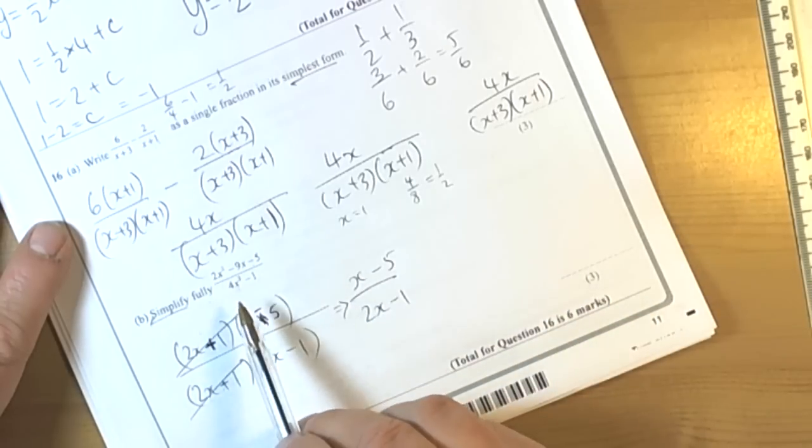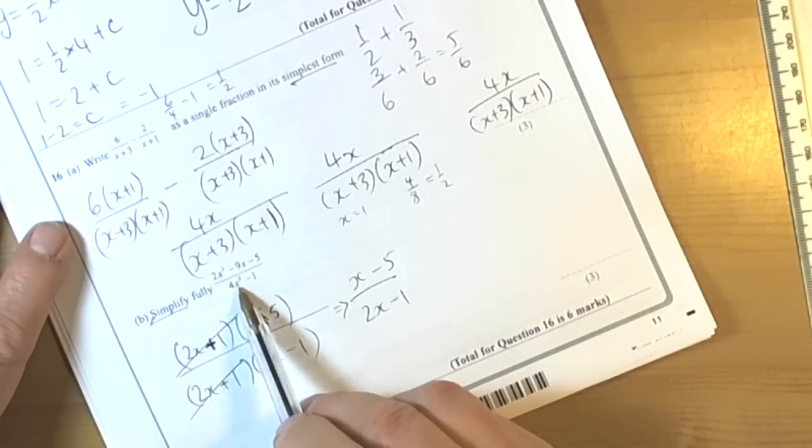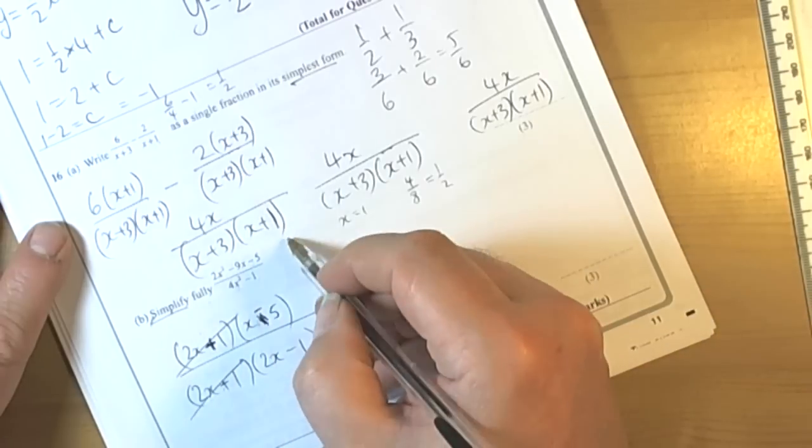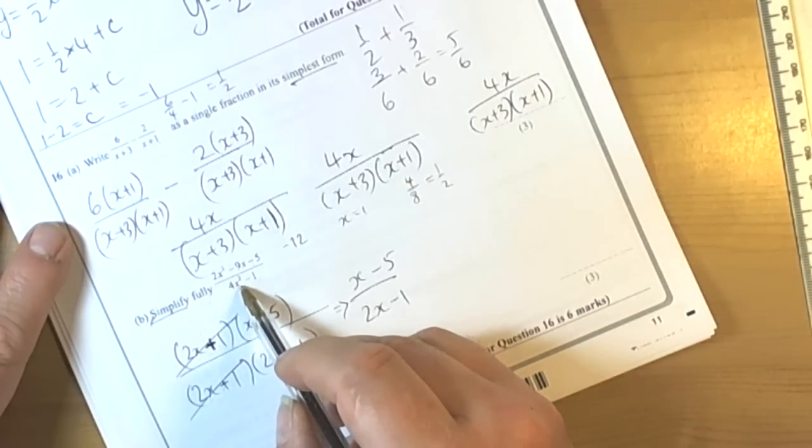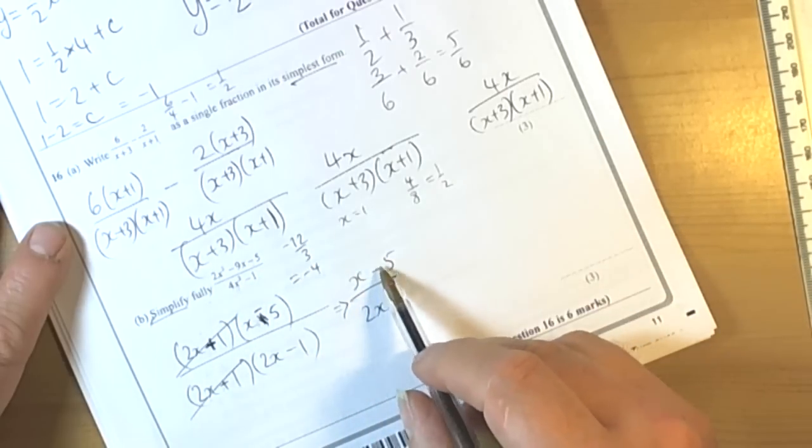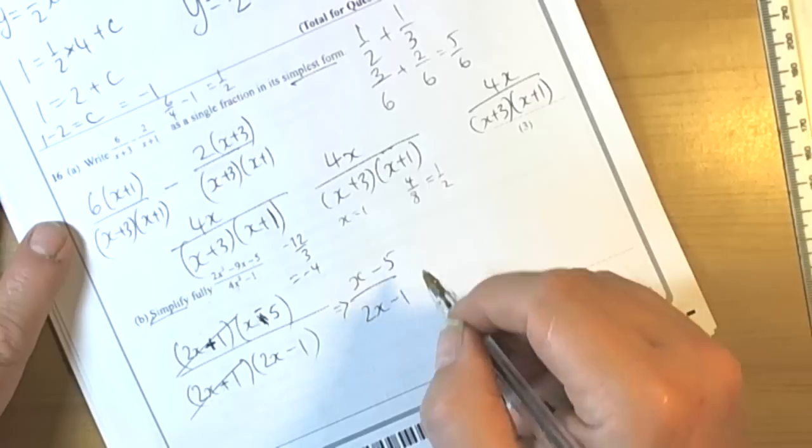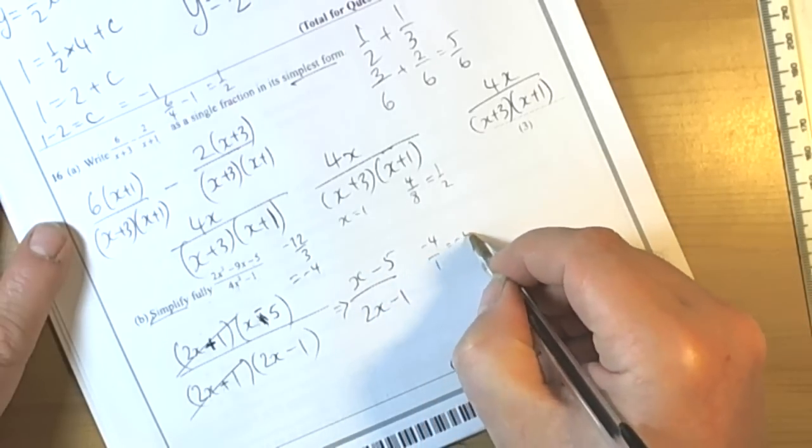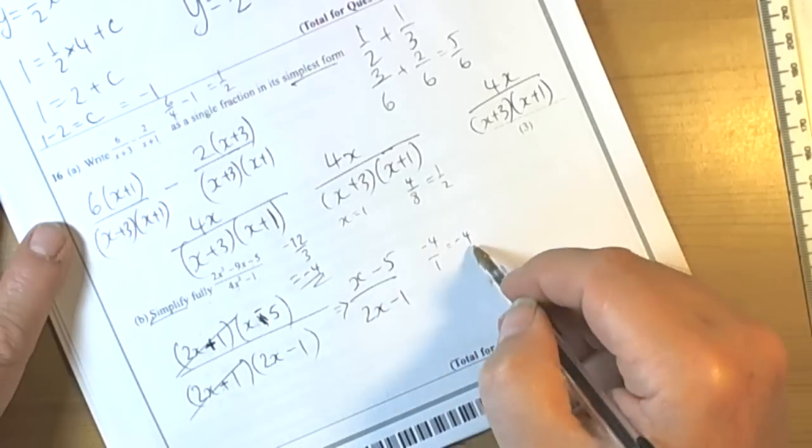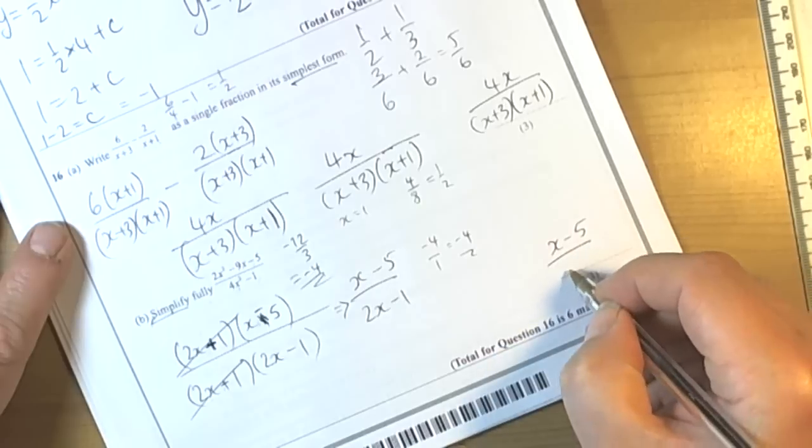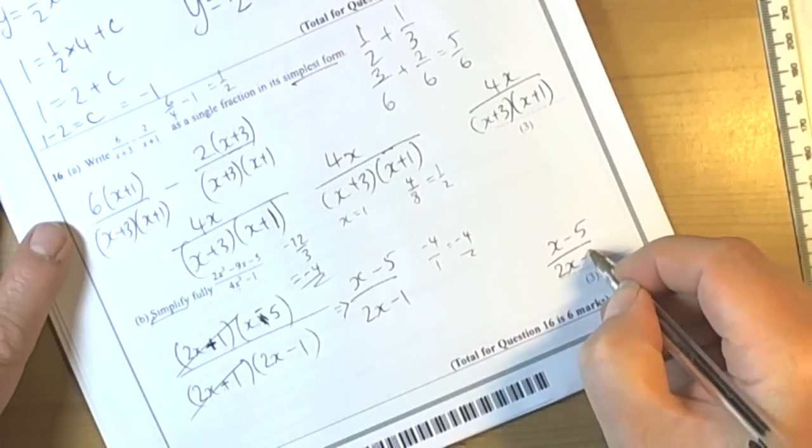Again, we should check. So if we put a simple value in of 1 into this, then we can see that the top would be 2 take away 9, that's negative 7, take away 5 is negative 12. 4 times 1 squared is 4, so 4 take away 1 is 3. So this gave me an answer of negative 4. So what have we got? We've got 1 take away 5, which is negative 4, and we've got 2 take away 1, which is positive 1. So this gave an answer of negative 4. So our check has shown us that both ways we get negative 4, so we can be reasonably confident that our final answer would be x minus 5 over 2x take away 1.